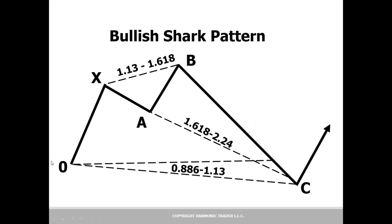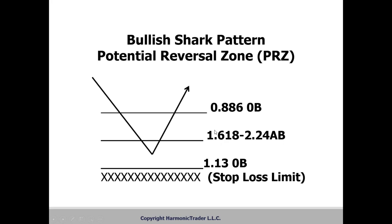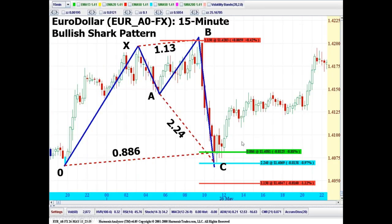Here's a bullish shark. We have that extreme zero XAB extended move — this XAB move is the failed breakout. That gives us another reaction down where we're now dealing with this 0.886/1.13 natural support with an unsustainable 1.618/2.24 move. This is really a sharp bounce we're looking at in this zone against the prior support low, especially where this 1.618/2.24 AB comes in.